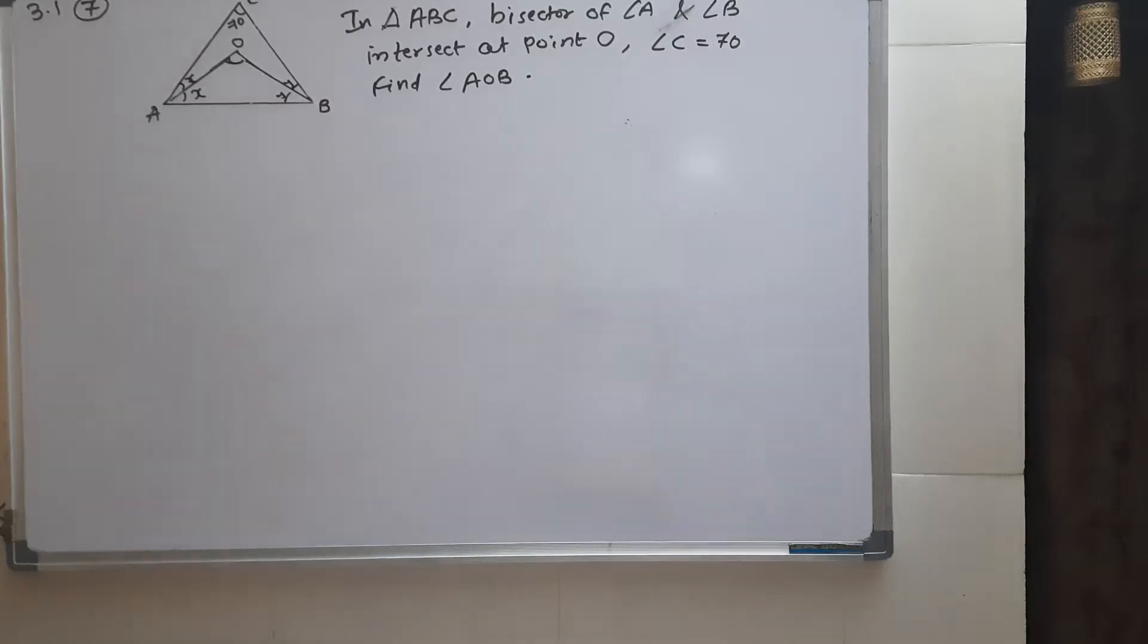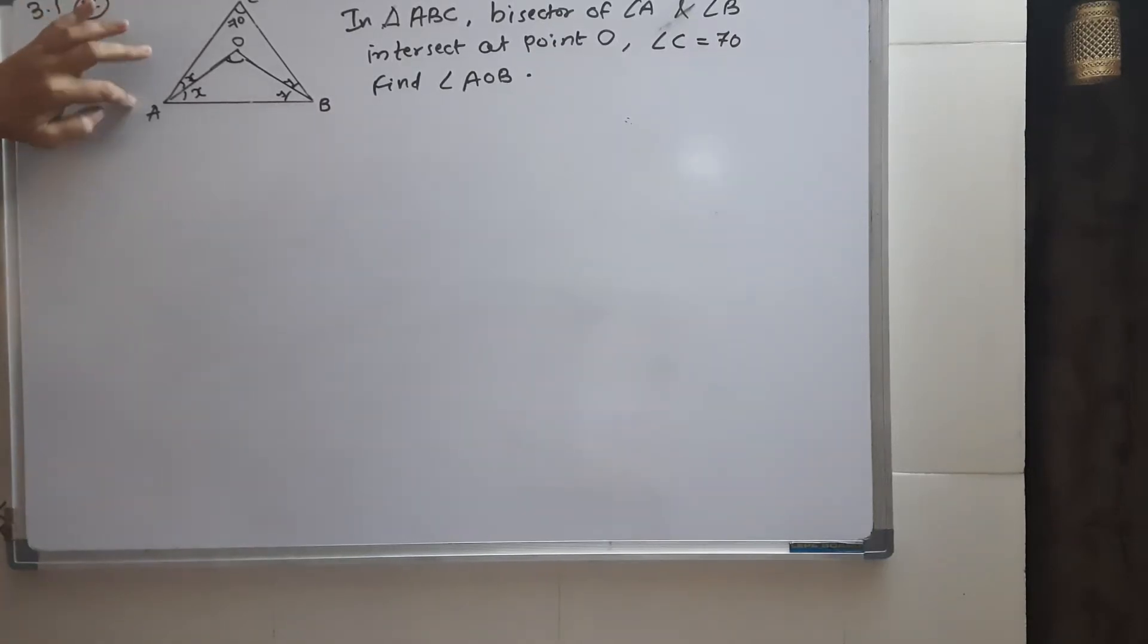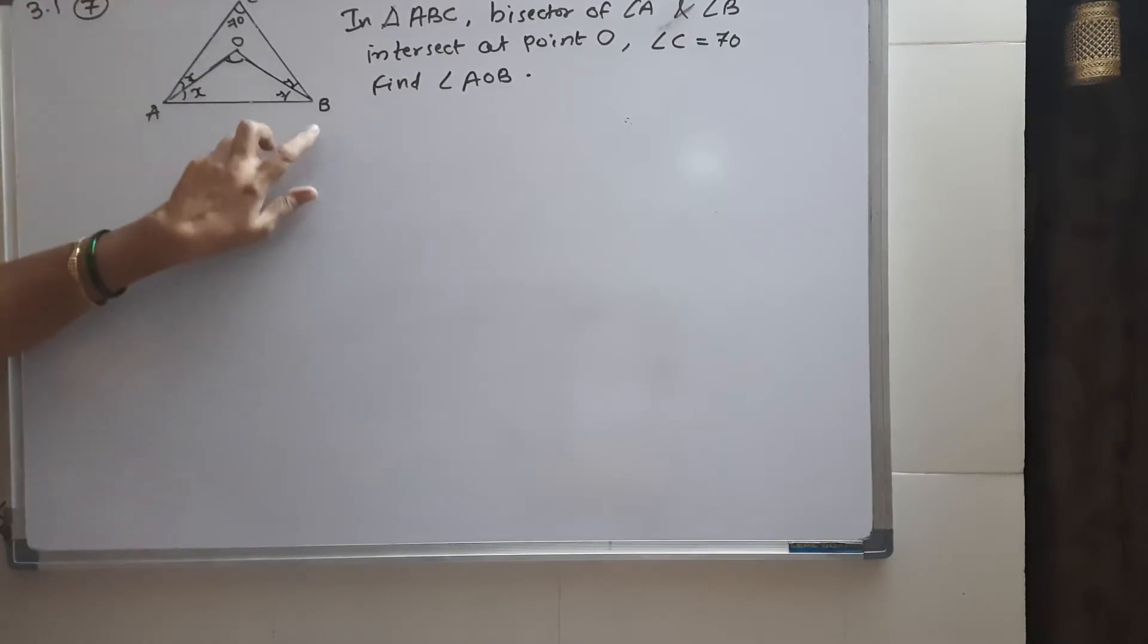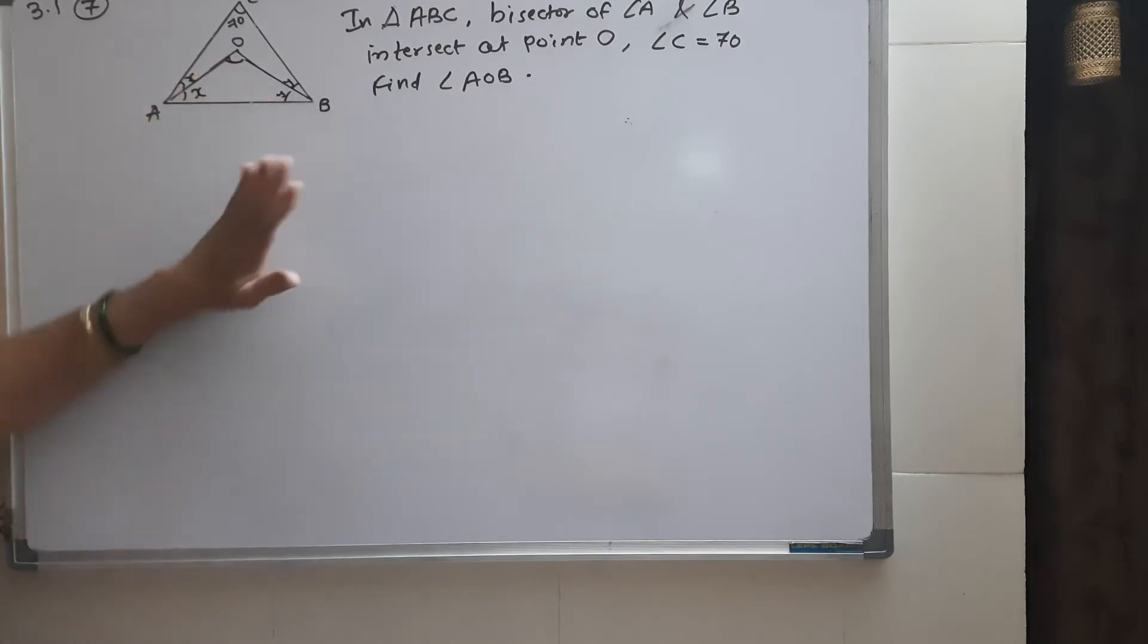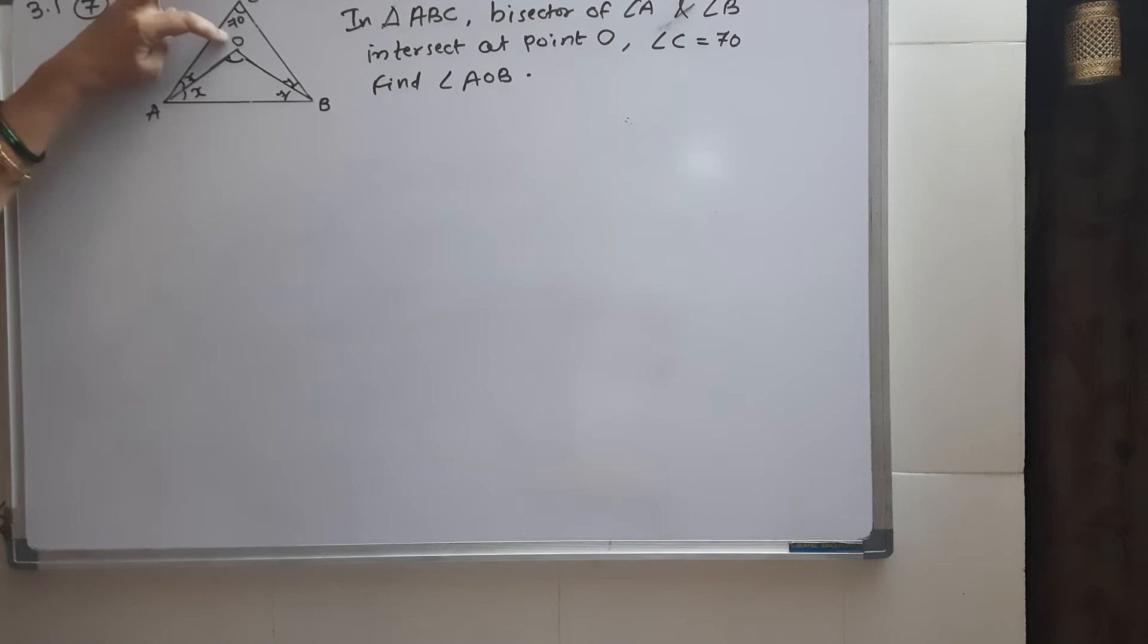Question 3.1 number 7: In triangle ABC, the bisector of angle A is AO and the bisector of angle B is BO, intersecting at point O. Angle C is 70 degrees. We have to find angle AOB.